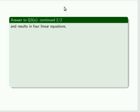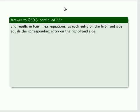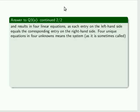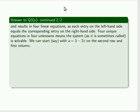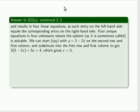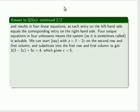So this results in four linear equations, as each entry on the left-hand side equals the corresponding entry on the right-hand side. Four unique equations in four unknowns means the system, as it is sometimes called, is solvable. We can start, say, with a equals 3 minus 2c on the second row and first column, and substitute into the first row and first column to get 3 times (3 - 2c) + 5c equals 4, which gives c equal to 5, which means that a equals minus 7.